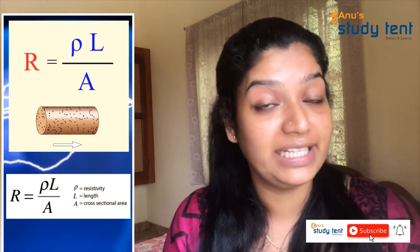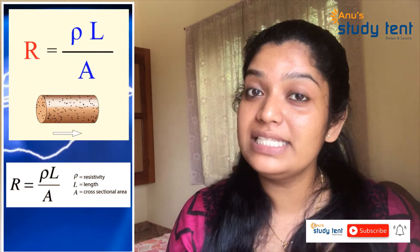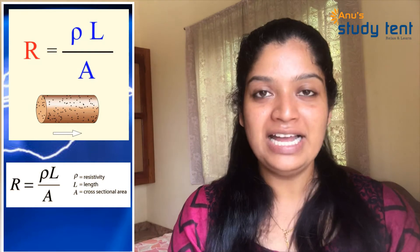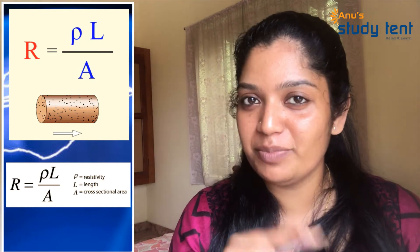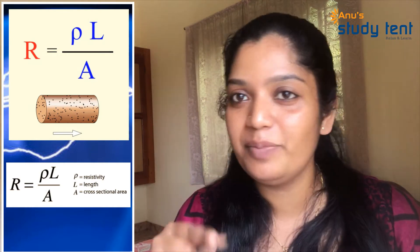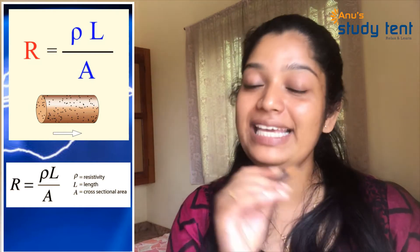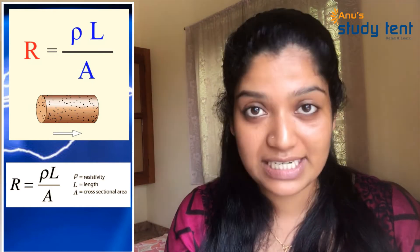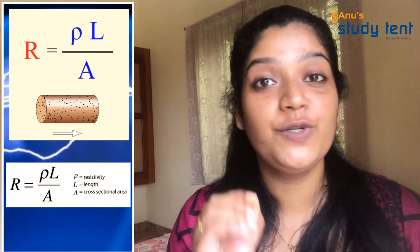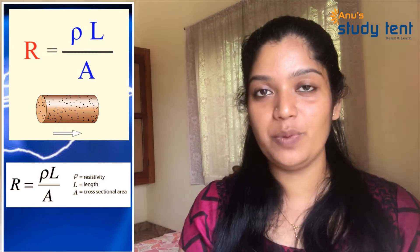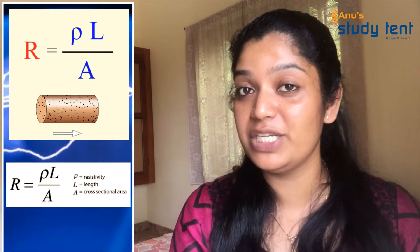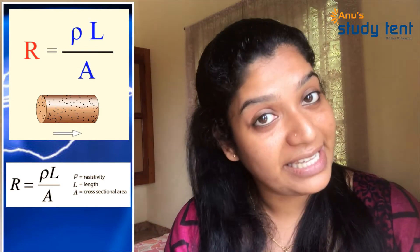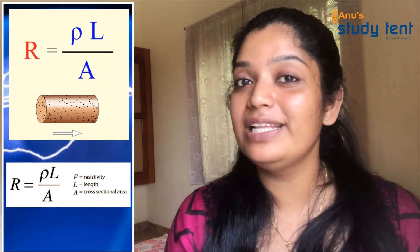Resistance is directly proportional to the length of the conductor and inversely proportional to the area of cross-section, so R is proportional to L by A. Introducing the proportionality constant, R is equal to ρL by A, where ρ is called the resistivity of the material.